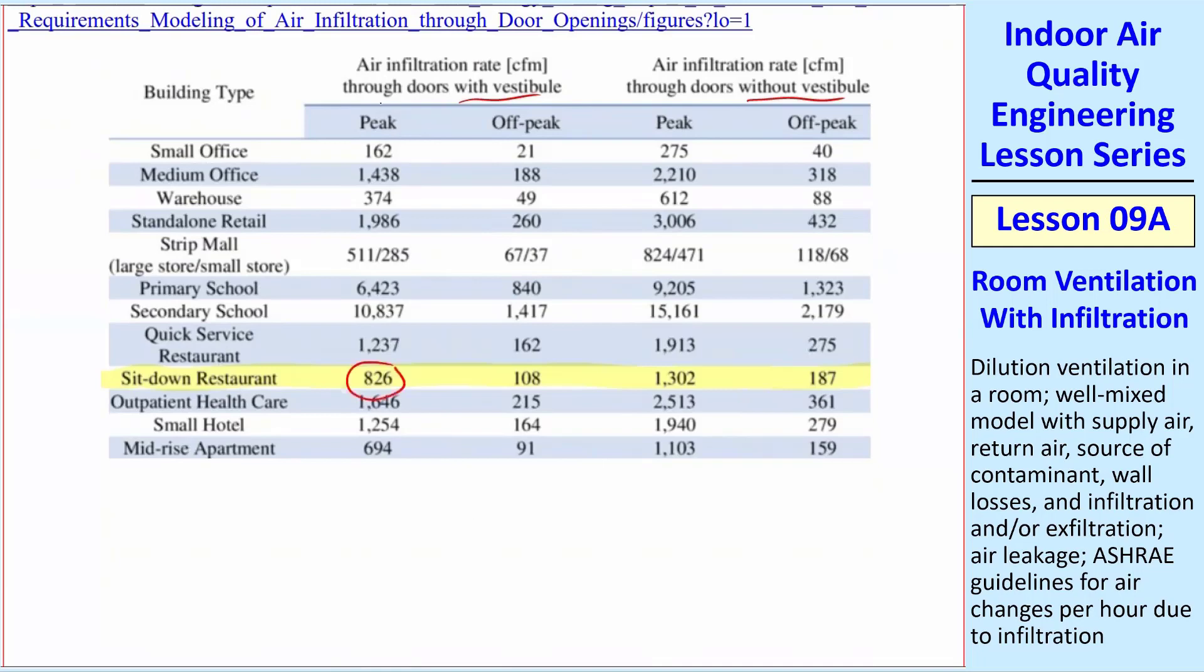you can see that without a vestibule, you have about 1,300 CFM infiltration. And with a vestibule, you've cut that down to 826. So this concludes that a vestibule, which is like an entrance area where you come in the main doors from outside, and then there's another set of doors to go through to actually get in the room where you're heating, the vestibule has reduced infiltration by 0.63.